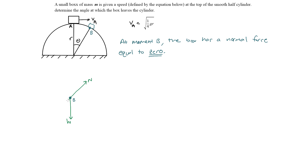We can define this angle, which is collinear with the normal force, as theta. This can be seen by using alternate interior angles: since this line is parallel with the line over here, these angles are congruent. So that's why we can say this interior angle is theta.